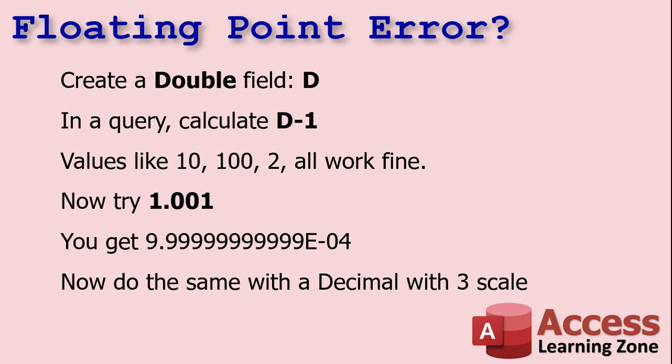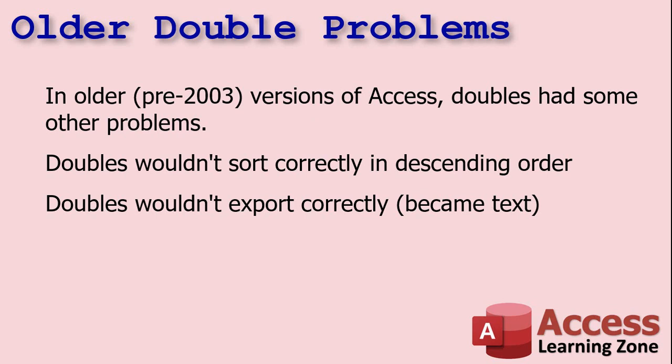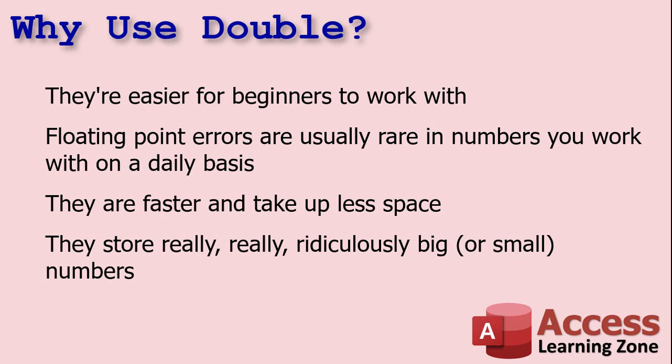So if you need an exact specific number of decimal points, go with decimal. Double does have some other problems — in older pre-2003 versions of Access, doubles had issues sorting correctly in descending order and wouldn't export correctly, sometimes getting converted to text values. But as of 2023, these don't seem to be a problem anymore. I use doubles and haven't built any applications where I needed a decimal. Also, if you're working with money, use the currency data type — it's specially optimized for money values.